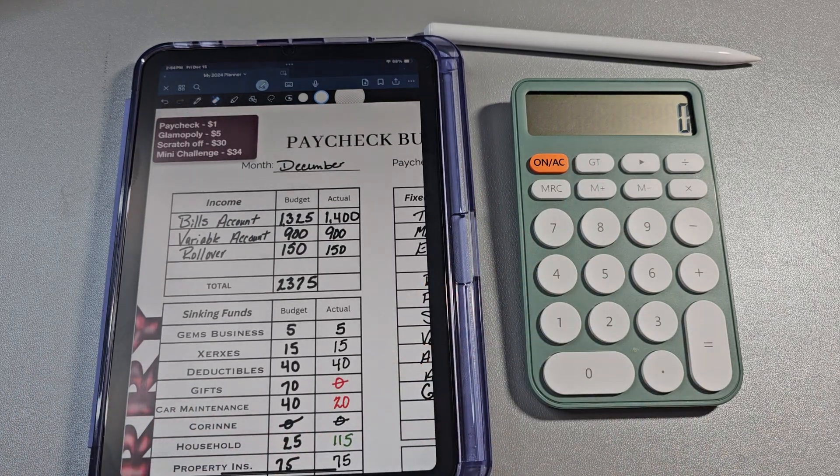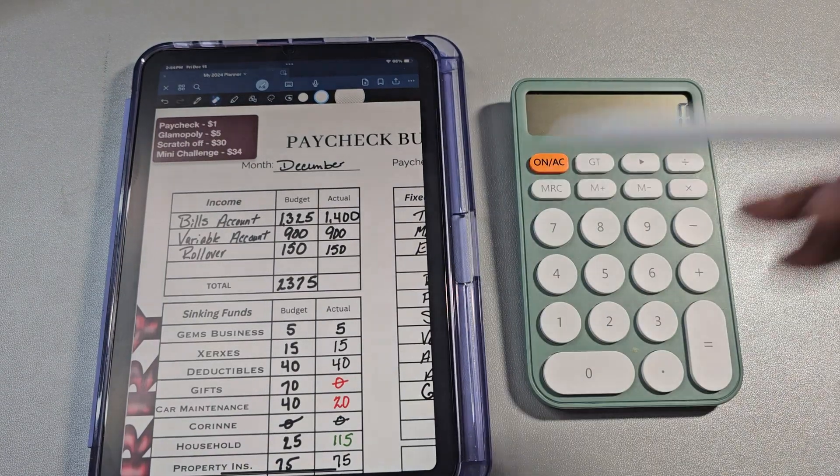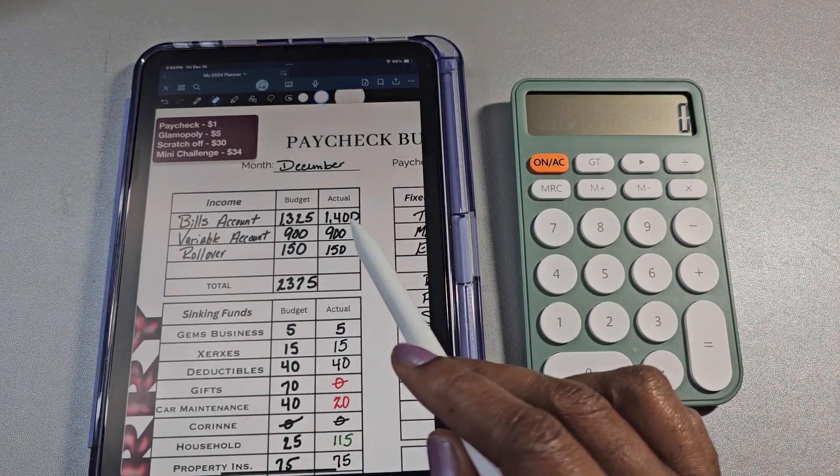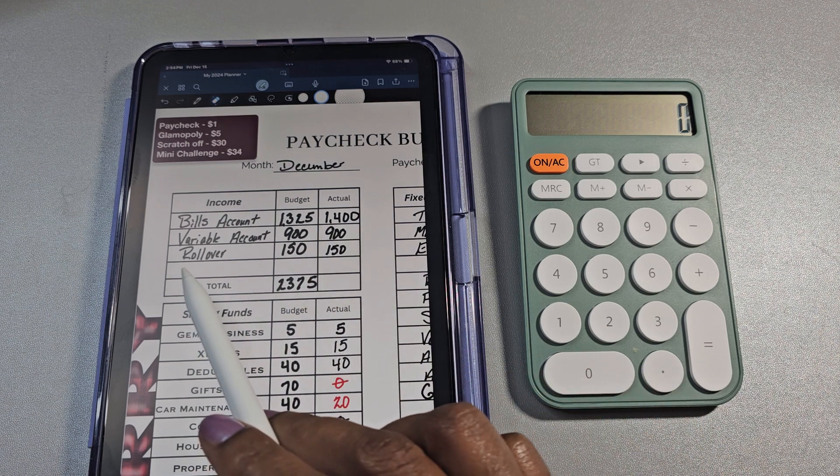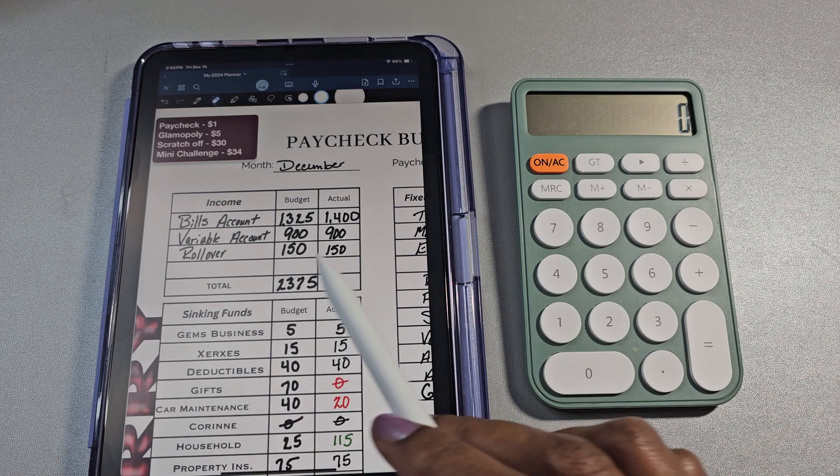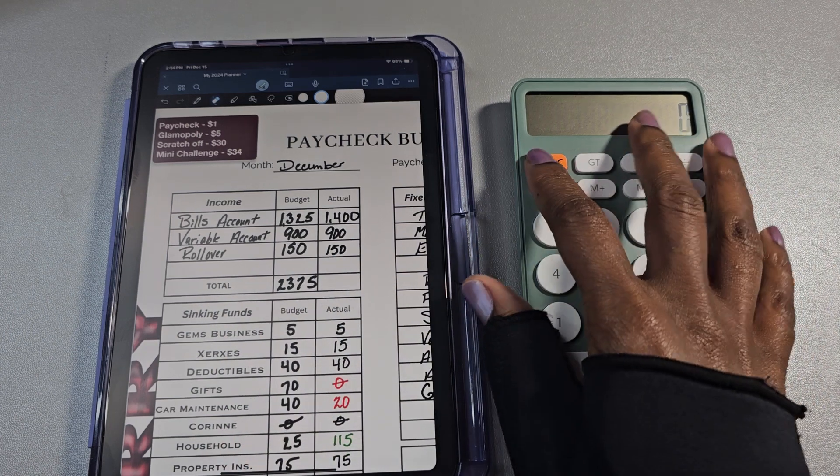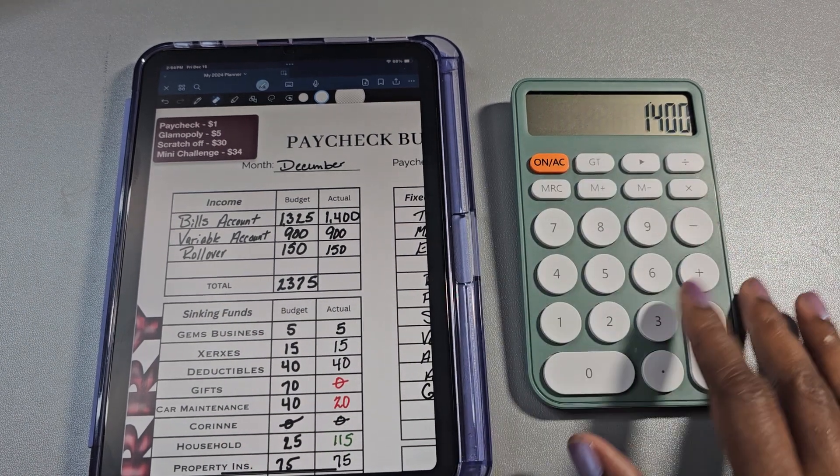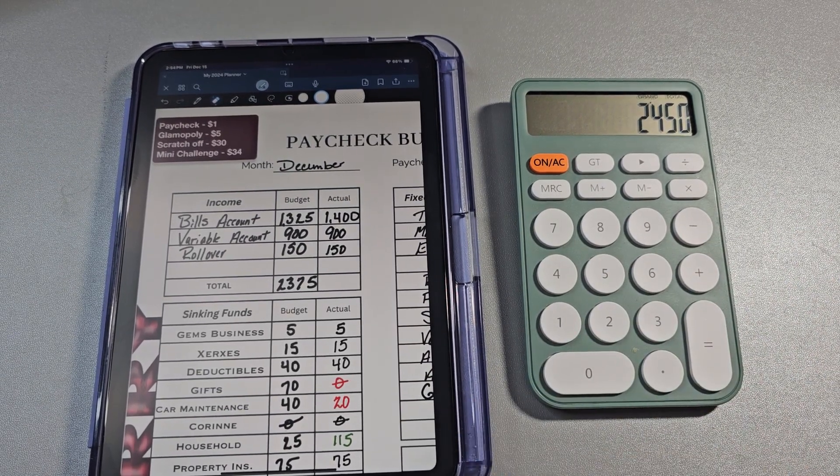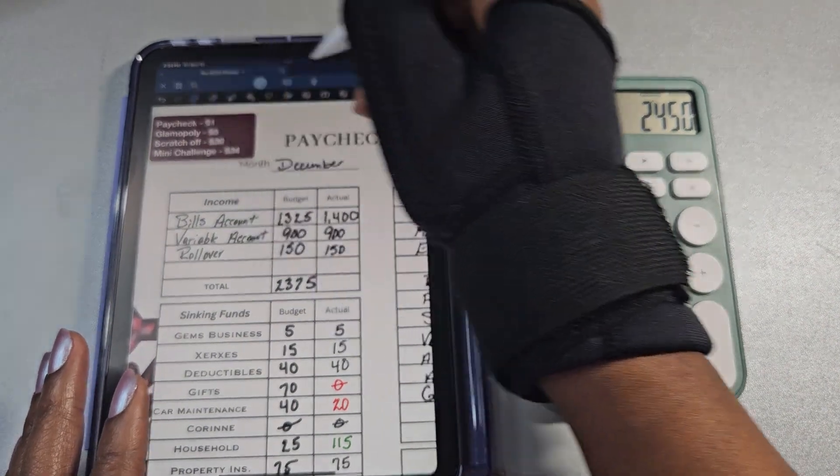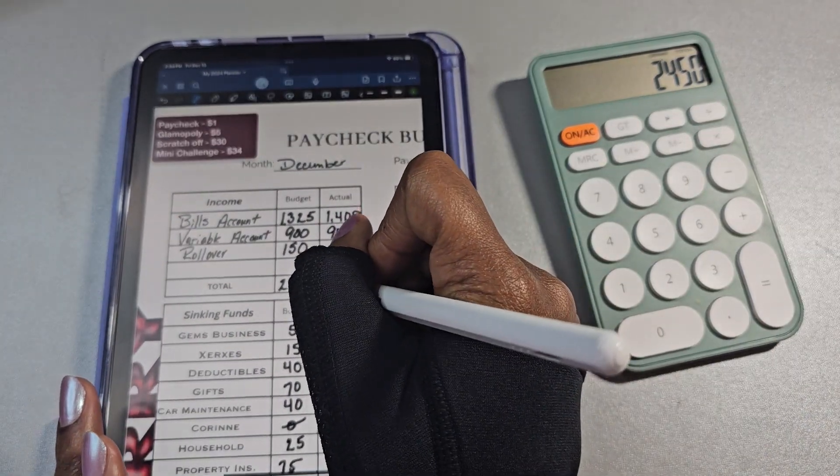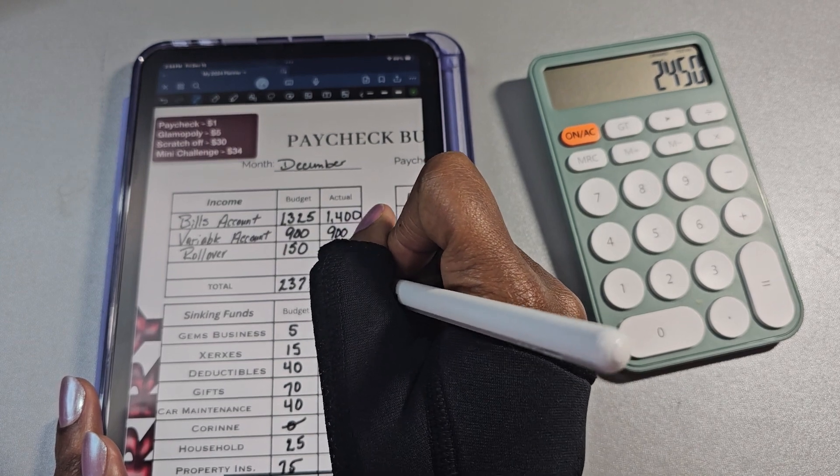So for my income, I budgeted $1,325, that actually came in at $1,400 for my bills account. Variable account came in at $900 as expected. Rollover was $150 as expected. So when I add those up together, that is $2,450, and this will be colored in green because I made more than I expected.